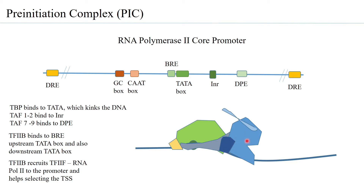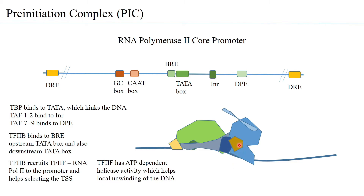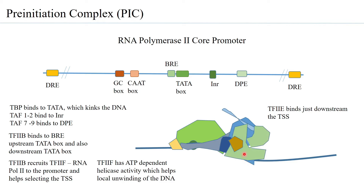After TF2F and RNA polymerase 2 have bound, what comes and binds is TF2E. TF2E is a transcription factor that brings in the next general transcription factor, TF2H, and also TF2J.